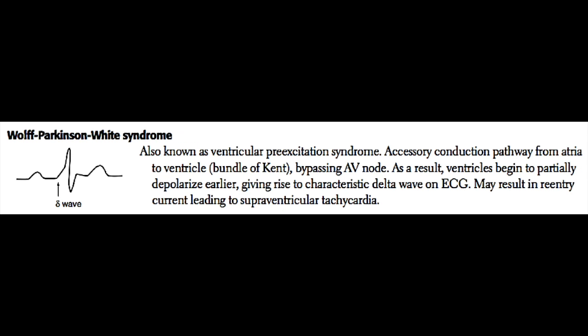This slide shows a delta wave, which is the hallmark of Wolff-Parkinson-White syndrome. WPW syndrome is caused by an accessory pathway from the atrium to the ventricle. Normally, the AV node is the only way electrical signals travel from the atrium to the ventricle; the rest of the cardiac skeleton acts as an insulator. However, some people are born with an accessory muscular pathway from the atrium to the ventricle, and in these patients, a fast connection can develop, which is represented as the delta wave.